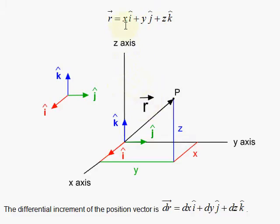You have r vector which can be thought of as a sum of three vectors where i-hat, j-hat, and k-hat are unit vectors in the x, y, and z directions respectively, and x, y, and z are your magnitudes.